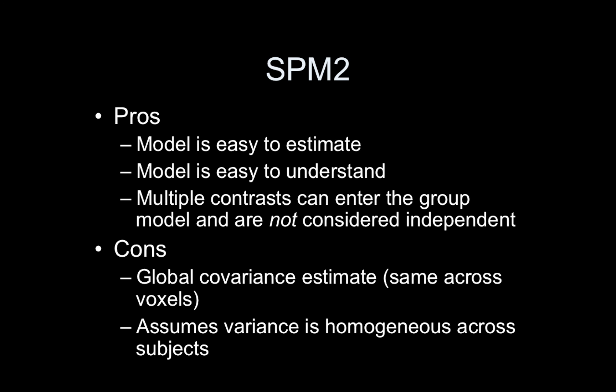Pros: easy to estimate, models easy to understand, multiple contrasts can enter the group model and not be considered independent. Cons: a global covariance estimate, and also it assumes the variance is homogeneous across subjects. I actually wrote a paper about that in 2009—I think it's called Simple Group Models or something like that—and we actually show that this SPM approach, the type 1 errors are fine. You just take a slight hit in power with the one-sample t-test by assuming the variances are homogeneous if they are not.